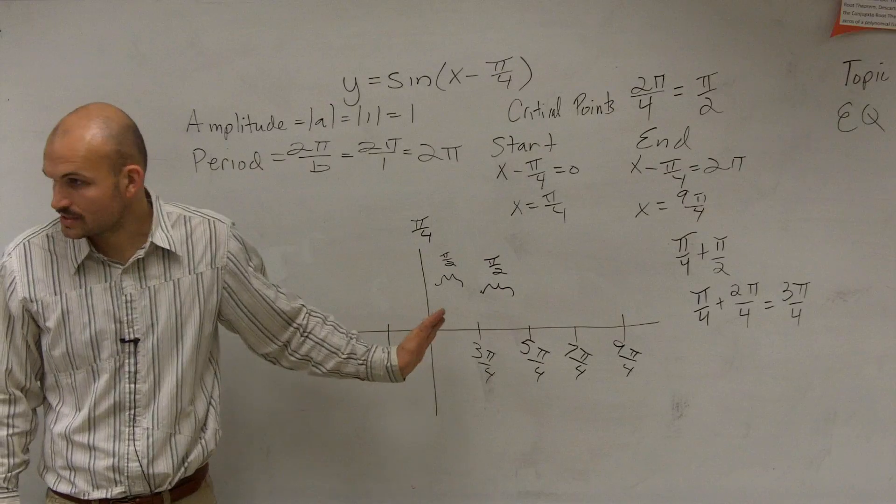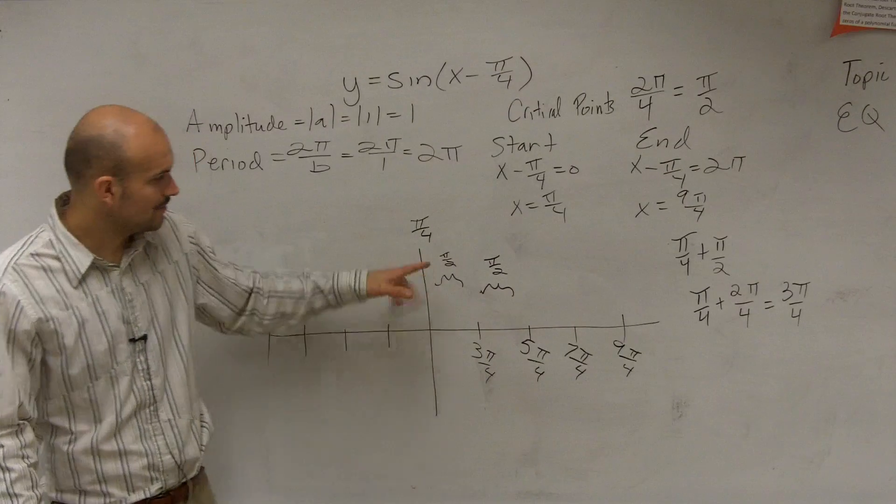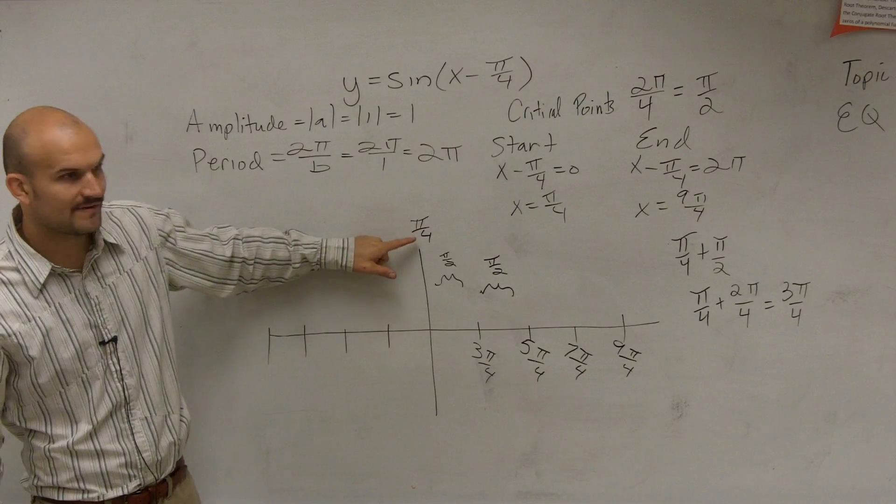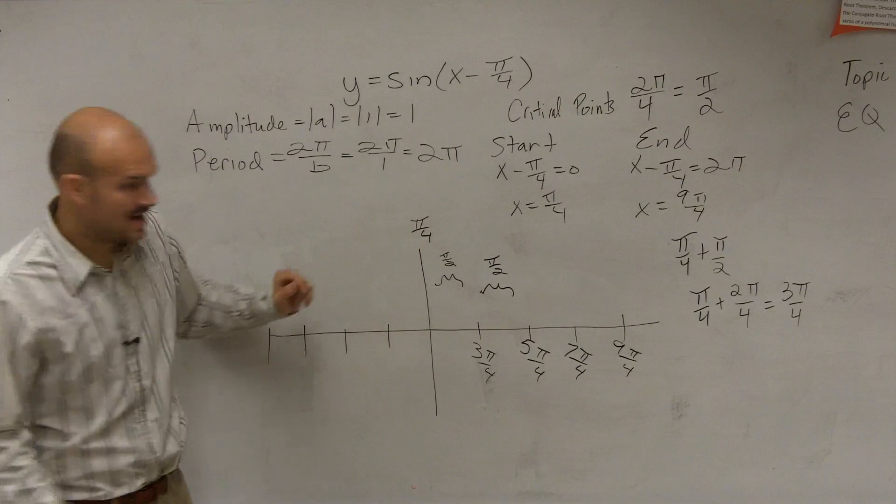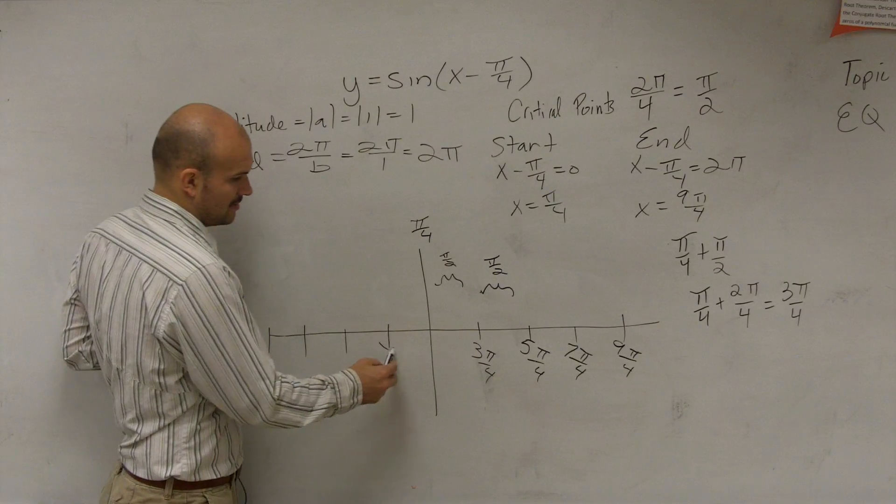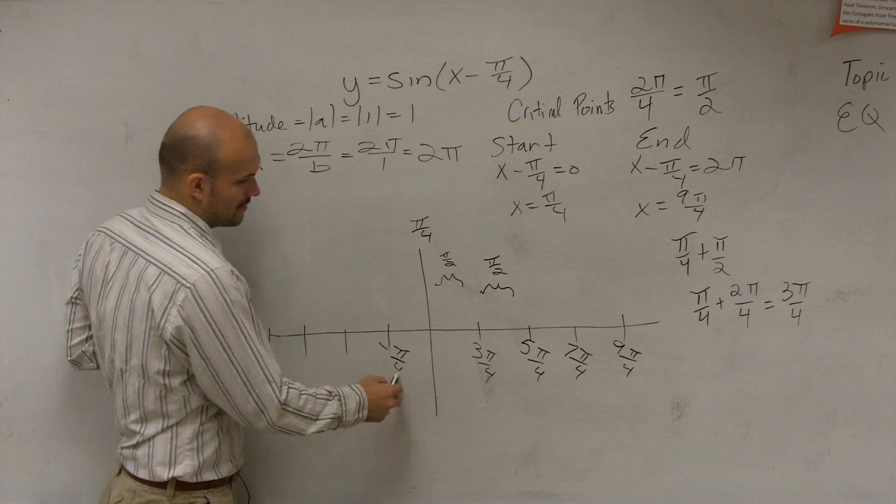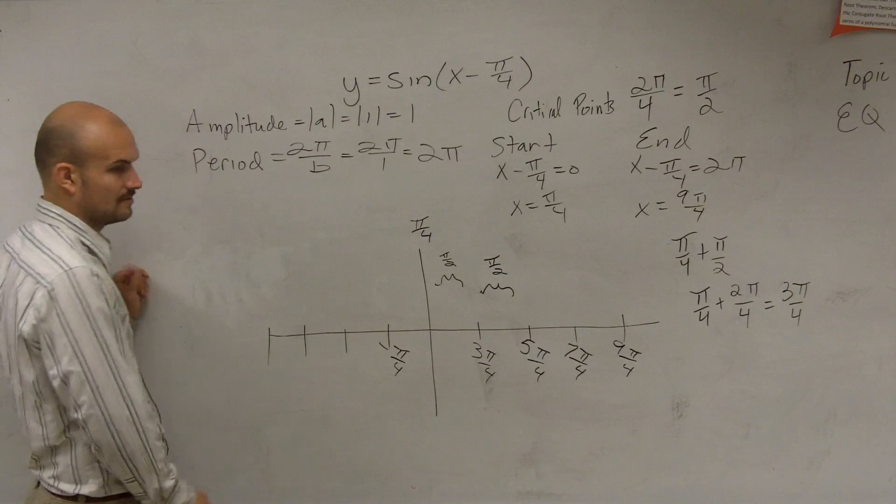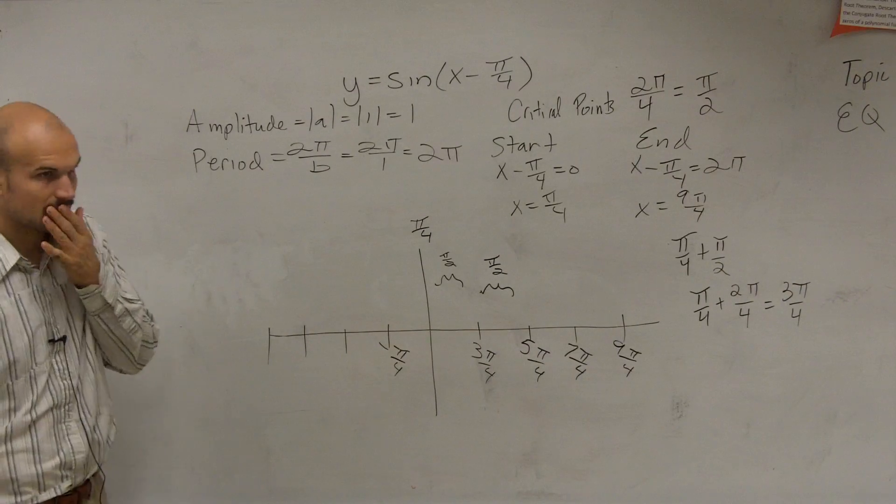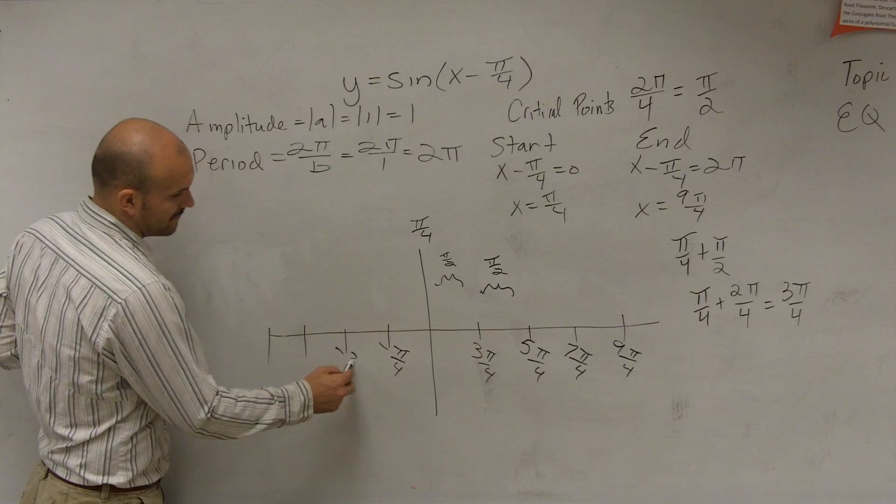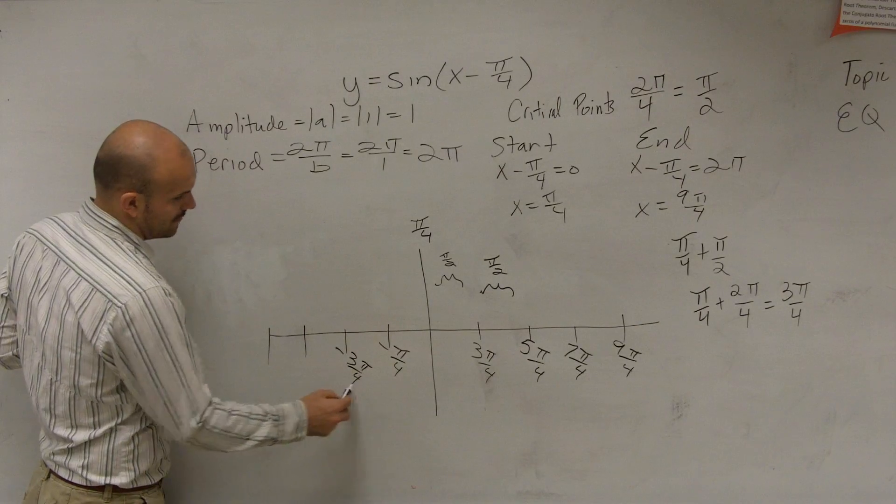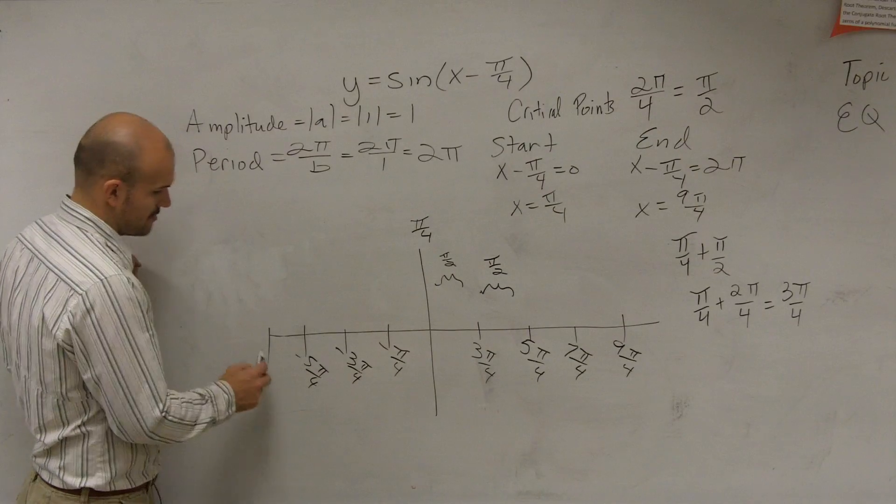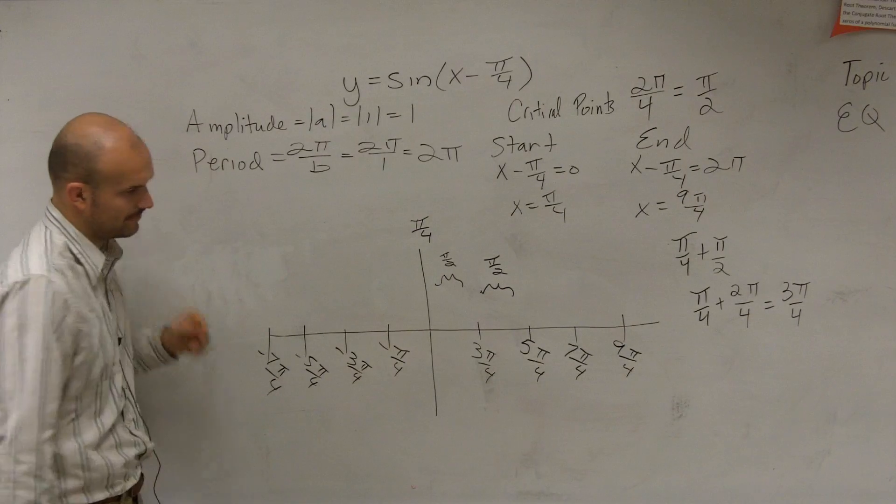Now, let's go back in the negative direction. So if I have π halves or π over 4 minus π halves, that's going to provide me with negative π over 4. Then I'm going to have a negative 3π over 4, negative 5π over 4, and a negative 7π over 4.